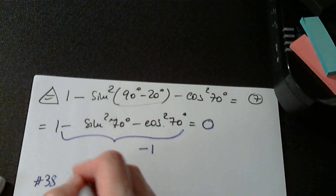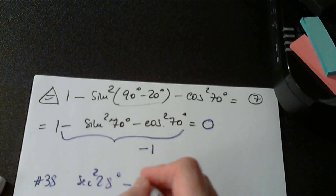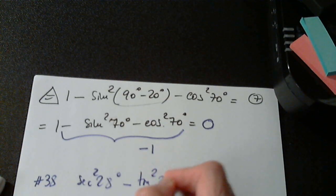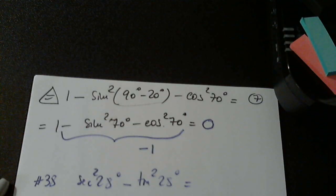I see. Secant squared 28 degrees minus tangent squared 28 degrees. Perfect, excellent, good.